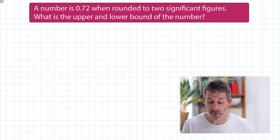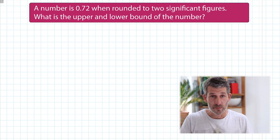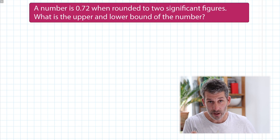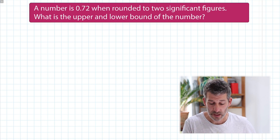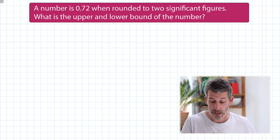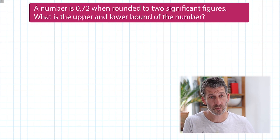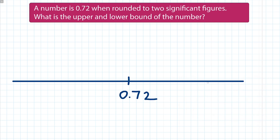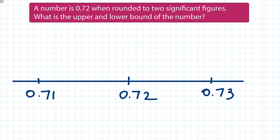A number is 0.72 when rounded to two significant figures. What's the upper and lower bound? I'm going to draw a number line with 0.72 in the middle. The first significant figure is the 7, which is in the tenths column, and the second significant figure is the 2, which is in the hundredths column. So because the second significant figure is in the hundredths column, my number line needs to go up in hundredths. The lower bound is halfway between 0.71 and 0.72, which is 0.715, and the upper bound is halfway between 0.72 and 0.73.